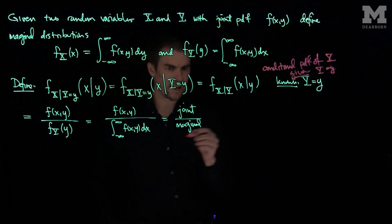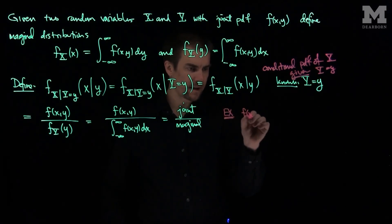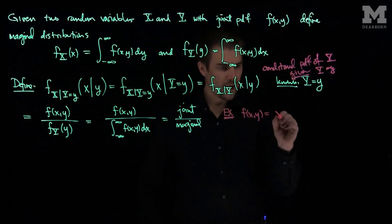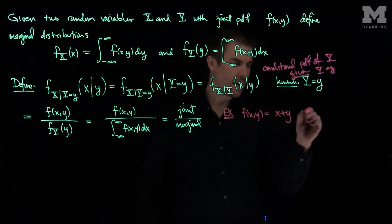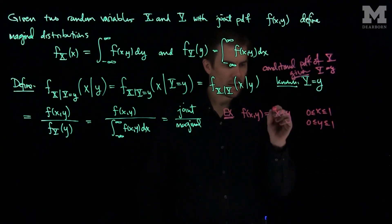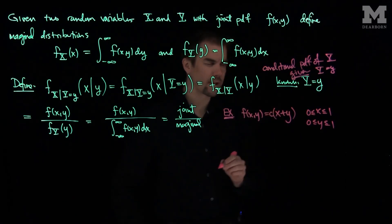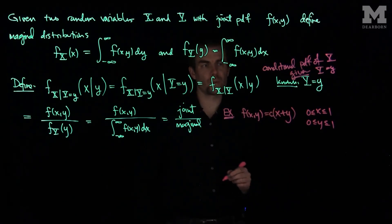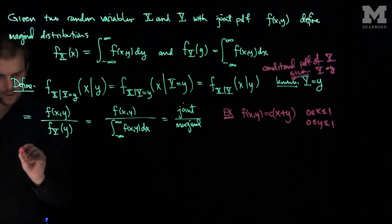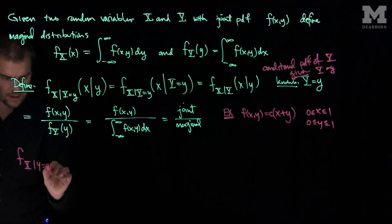And so here's our example. If f(x,y) is equal to c(x+y) on x between 0 and 1 and y between 0 and 1, where the constant c is chosen so the integral of f(x,y) over the unit square is equal to 1. Let's find f_{x|y}(x|y).